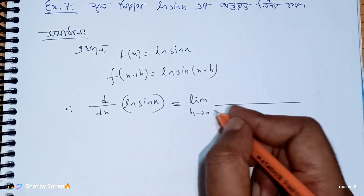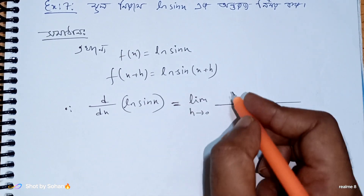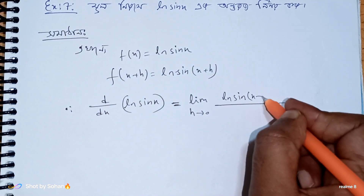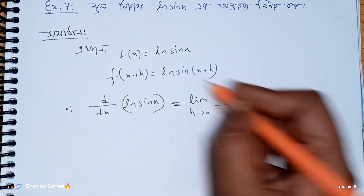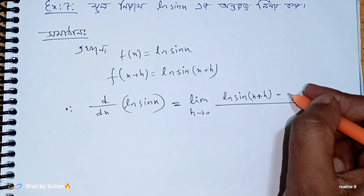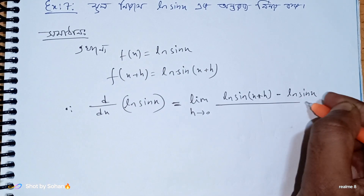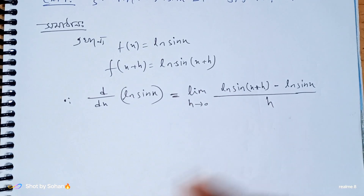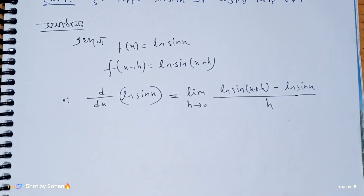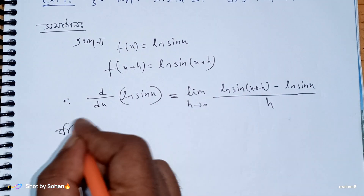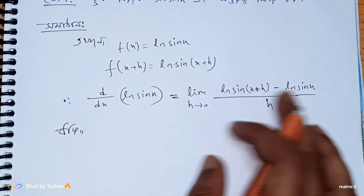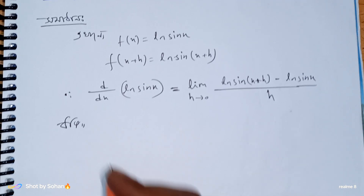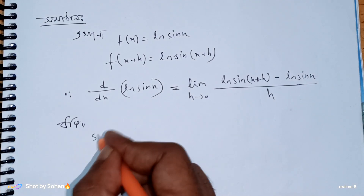Limit s tends to 0. What do you do? f of x plus s, f of x plus s is ln(sin(x+s)), minus f of x is ln(sin x), by s. So we will find the difference: ln(sin(x+s)) minus ln(sin x), divided by s.